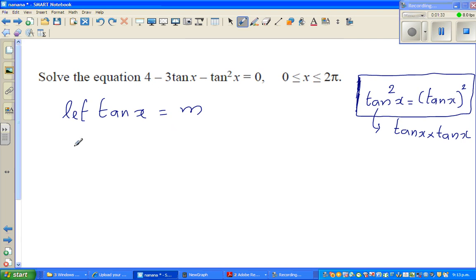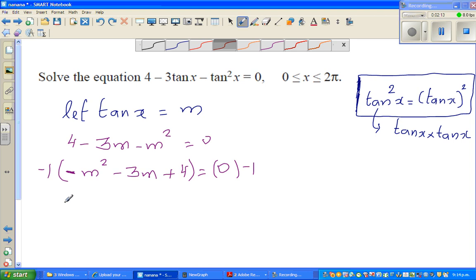So this equation will change to 4 - 3m - m² = 0. Now I can write the next step like -m² - 3m + 4 = 0. I don't like this minus in front of the first term, so I'm multiplying the whole equation with negative 1. I have to also multiply this with negative 1. So the next step becomes m² + 3m - 4 = 0.